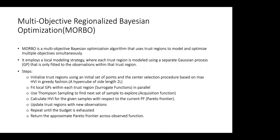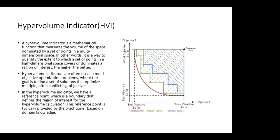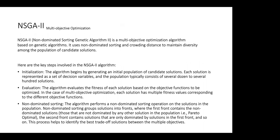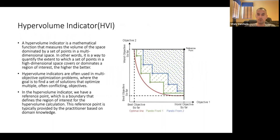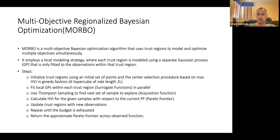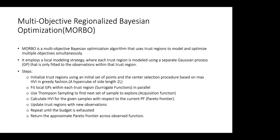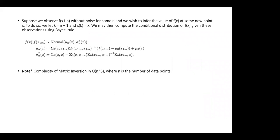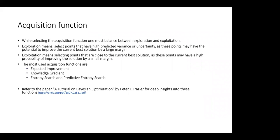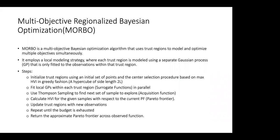NSGA-2 is just a genetic algorithm with no Bayesian optimization. MORBO is the multi-objective regionalized Bayesian algorithm they introduce. For Bayesian optimization, there should be calculation of probabilities and distributions showing what makes sense. The presenter notes that the Bayesian optimization background was added from other papers — the paper itself only contains this algorithm slide for MORBO.